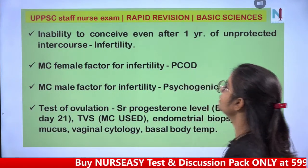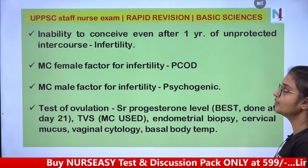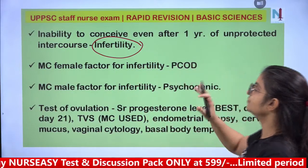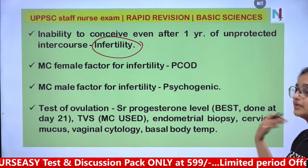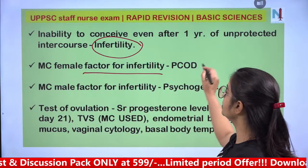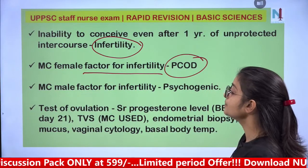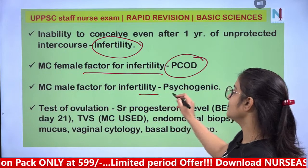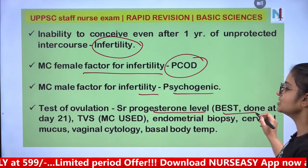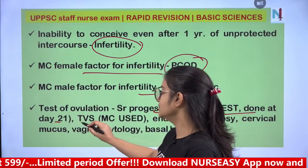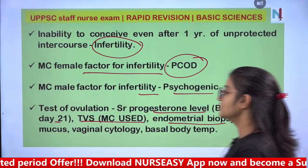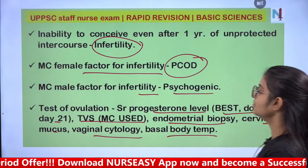Infertility is defined as inability to conceive even after one year of unprotected intercourse. The most common female factor for infertility is PCOD/PCOS. The most common male factor is psychogenic. Tests for ovulation include serum progesterone level (best done at day 21), transvaginal sonography, endometrial biopsy, cervical mucus, vaginal cytology, and basal body temperature.